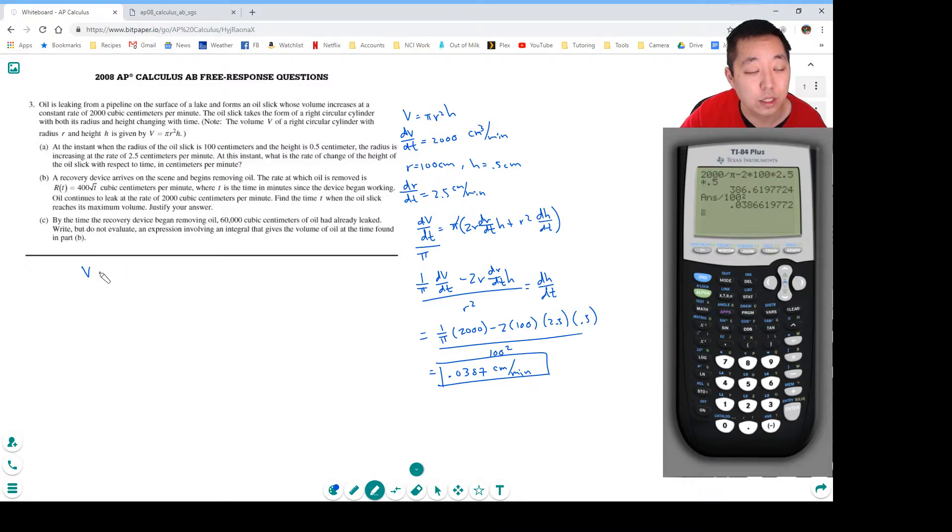So the volume of the oil slick... the maximum is going to be when the rate of change of the volume is zero. And if it's gaining volume at 2,000 cubic centimeters per minute and it's losing volume by 400 root t, then I want to know when this is equal to zero. So I want to know when 2,000 equals 400 root t. This over this gives me 5 equals the square root of t, or t would equal 25 minutes.